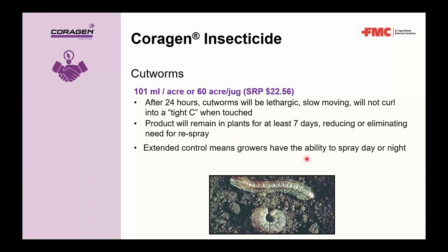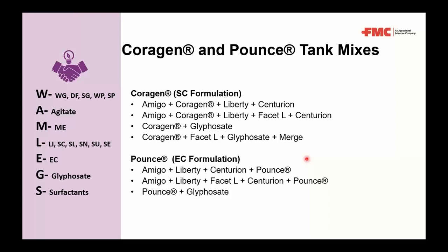When tank mixing Corrigan and Pounce to save growers time, note that Corrigan is an SC formulation and Pounce is an EC formulation. Following WHAM-LEGS tank mix order, Corrigan slots in as an SC and Pounce as an EC. For a Liberty/Centurion tank mix, Amigo goes in first, then Corrigan as the SC, followed by Liberty and Centurion. With Pounce, Amigo goes first, then Liberty and Centurion, with Pounce added last as the EC.